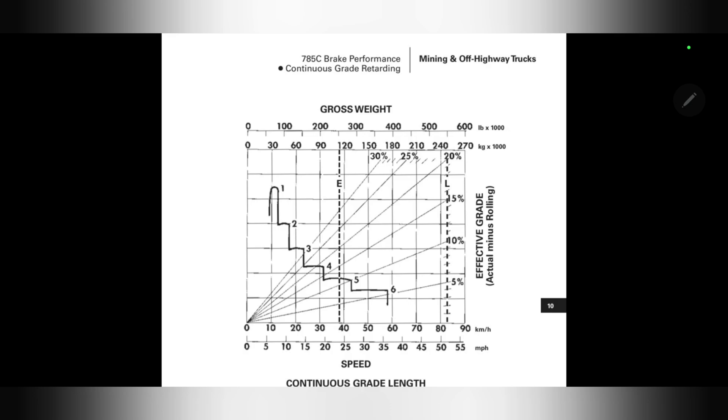How do we calculate the gear and maximum speed if we are travelling downhill instead? For downhill travels, we utilise the retard or brake curve.